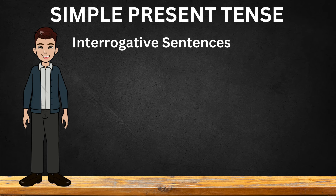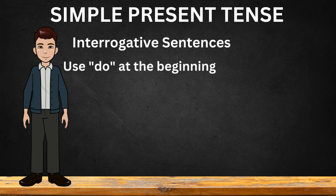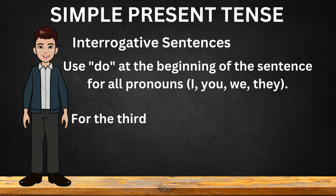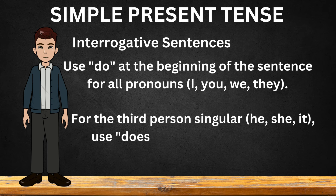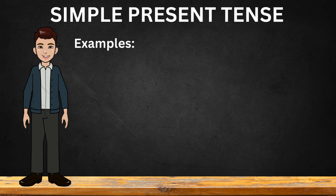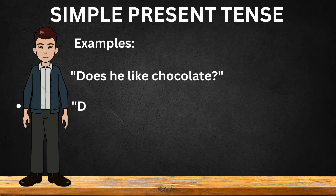Interrogative sentences: use 'do' at the beginning of the sentence for all pronouns — I, you, we, they. For the third person singular — he, she, it — use 'does' at the beginning of the sentence. Examples: Does he like chocolate? Do they play football?